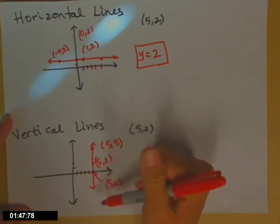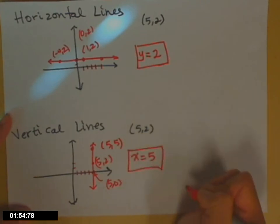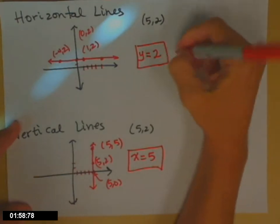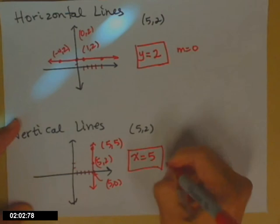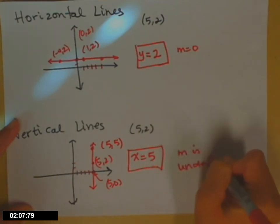So again, all along this line, regardless of what y is, x is 5. And that's how we write the equation for vertical lines. In case you're wondering, for horizontal lines, the slope is 0. For vertical lines, the slope is undefined.